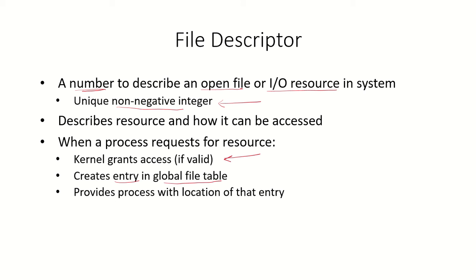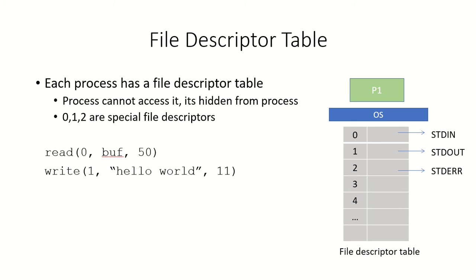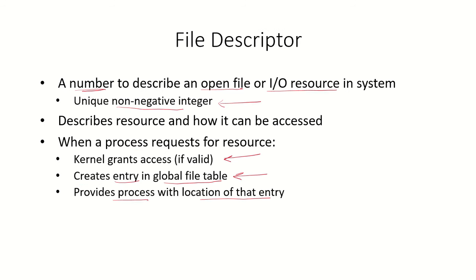The operating system maintains a global file table. Any file that has been opened or any I/O resource being accessed has an entry in this global file table. The kernel then provides the process with the location of that entry through the file descriptor.